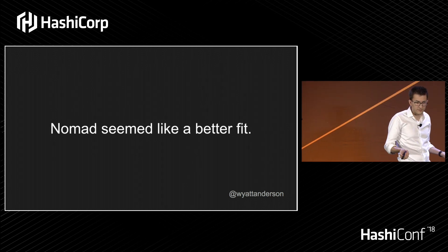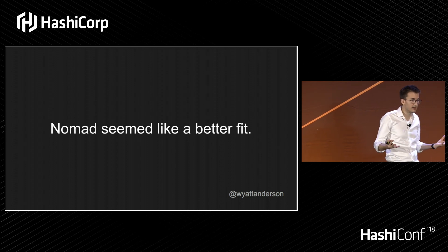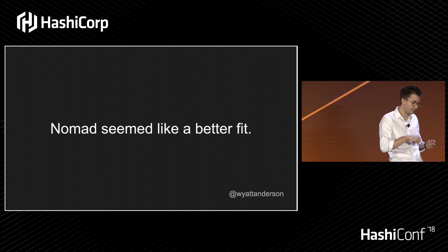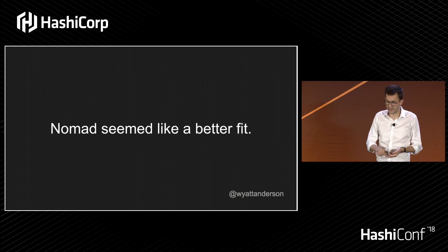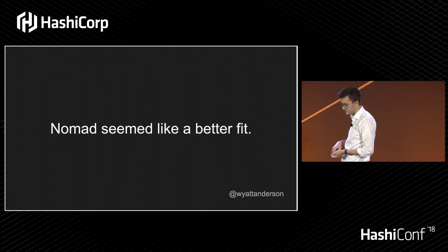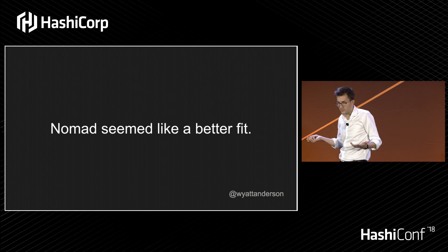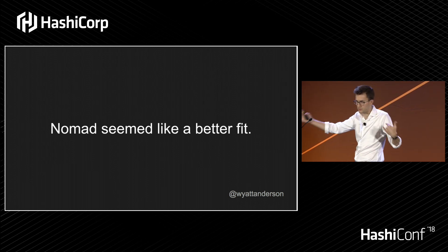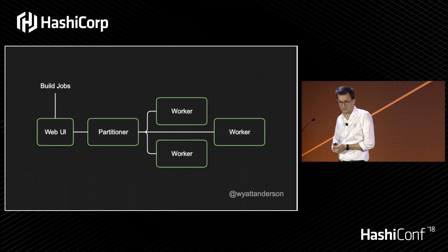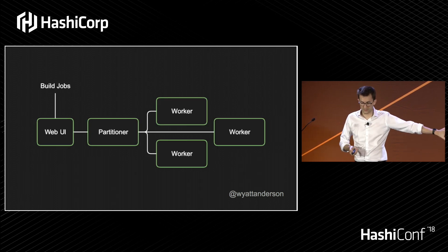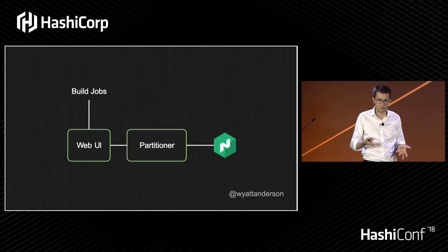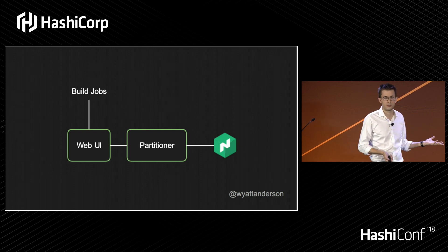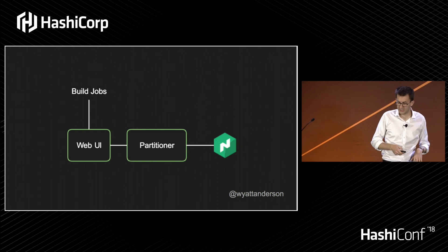A natural fit for us was Nomad. We're already big users of other HashiCorp products — we really love Consul, Terraform, Vault, Packer, Vagrant to an extent. Nomad's got a great batch scheduler, and this is a huge batch workload. What we did is basically replace those worker nodes with a Nomad cluster and a couple of other abstractions.